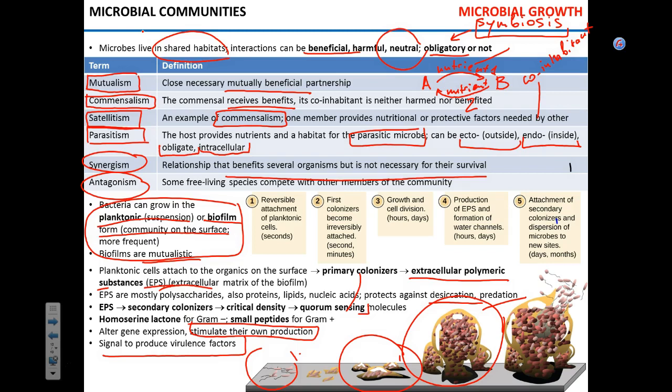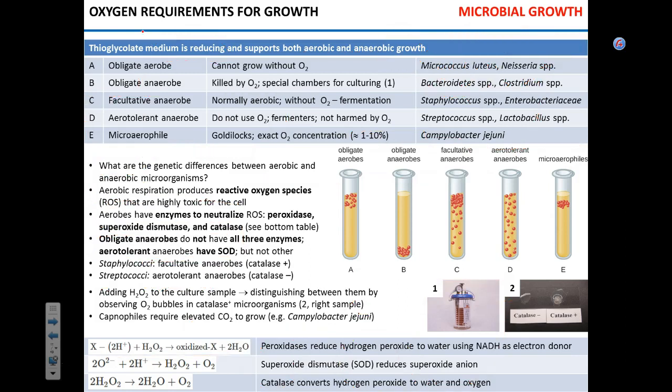Before moving on — any questions? EPS acts as positive feedback until the population reaches critical density, then nutrients become limited and competition begins. For this material, you need to recognize the roles of EPS and match terms like mutualism and synergism to their descriptions. We're going to talk now about requirements for microbial living: oxygen requirements, temperature, pH, ionic strength, and so on.